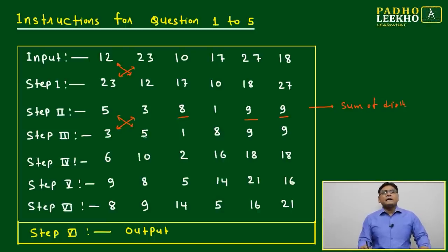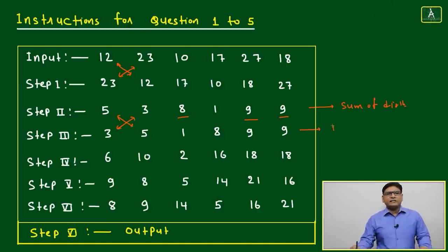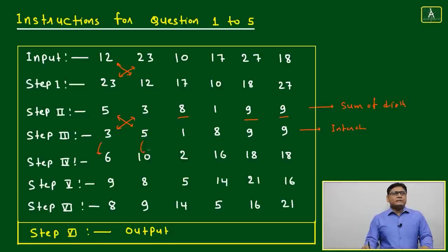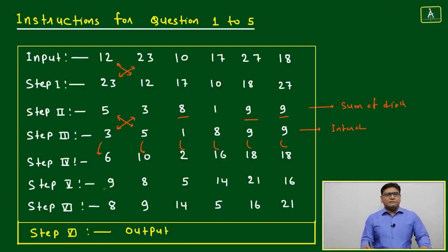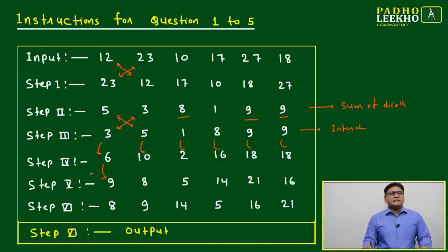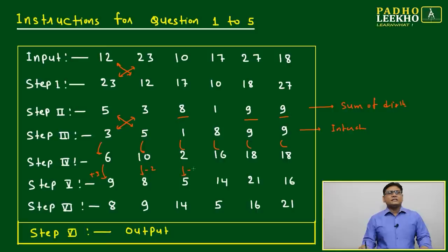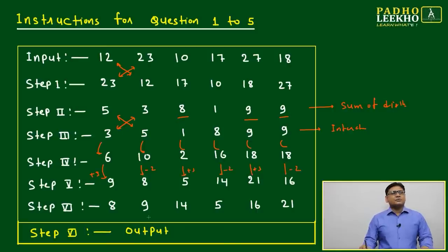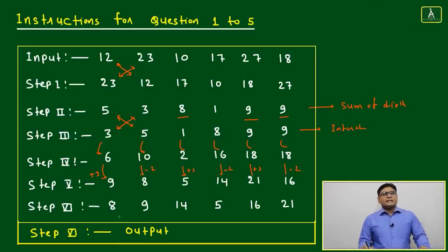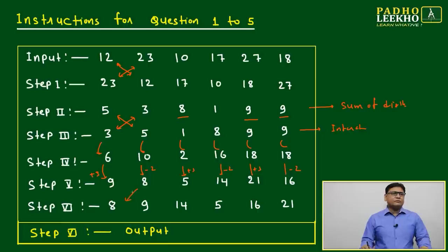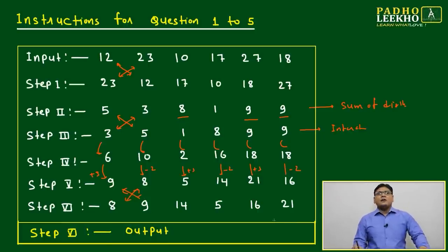Step 3 is the same as Step 1 — interchange positions again. Step 4: make it double. Step 5: increase alternate numbers by 3 and decrease the others by 2, alternating throughout the sequence.